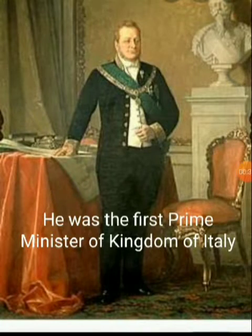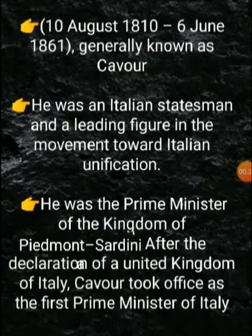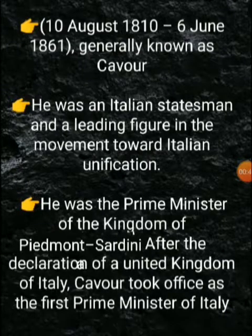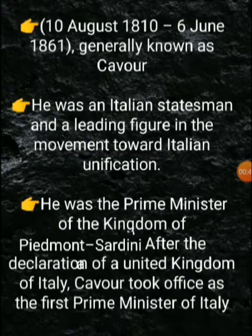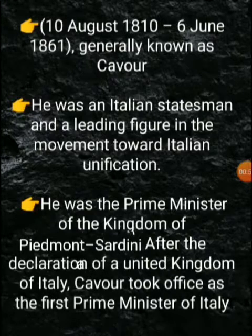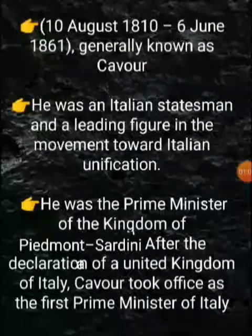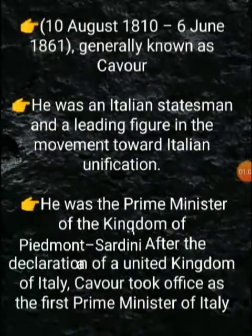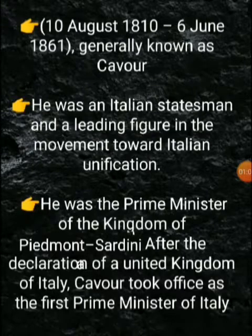First of all, his date of birth was 10th August 1810 and his death was 6th June 1861. He was an Italian statesman and a leading figure in the movement towards Italian unification. Statesman means he was a respected politician, and he played a very leading role in the unification.